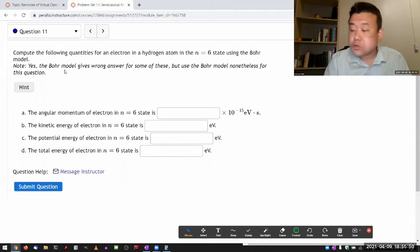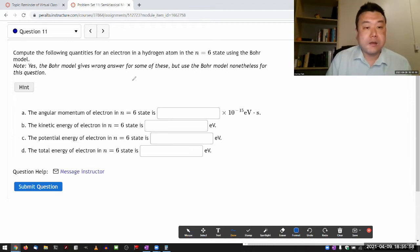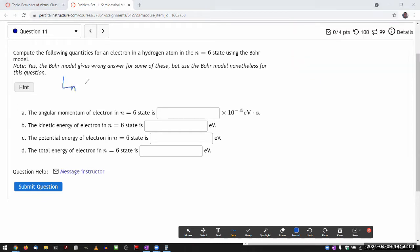In the Bohr model we start out with the assumption or the quantum mechanical proposition that the orbital angular momentum of the electron is quantized, so that they only come in these allowed values in units of h-bar, or h divided by 2π, in integer units of that. When it's asking about the angular momentum of the electron in n equals six state, I have that right away.